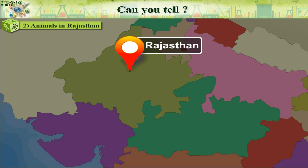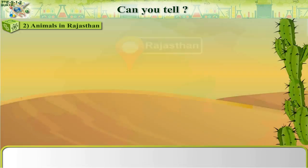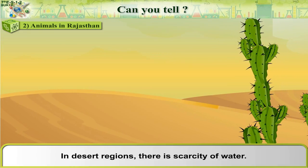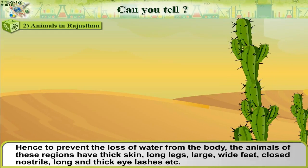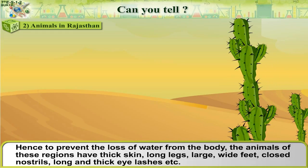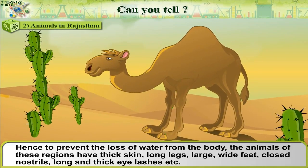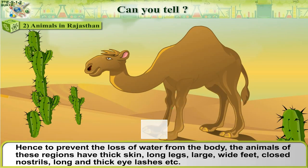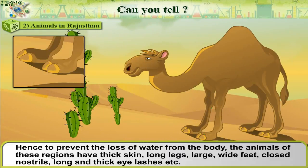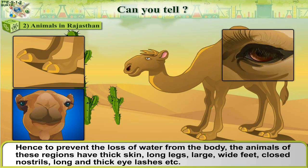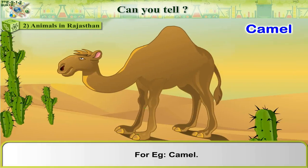Animals in Rajasthan: In desert regions, there is scarcity of water. Hence, to prevent the loss of water from the body, the animals of these regions have thick skin, long legs, large wide feet, closed nostrils, long and thick eyelashes, etc. For example, camel.